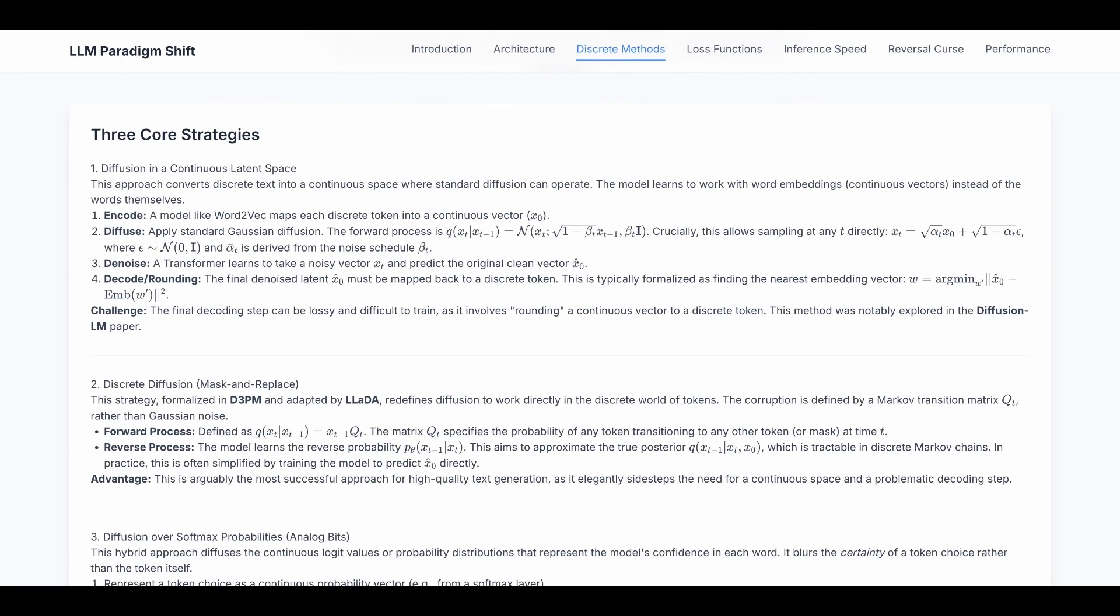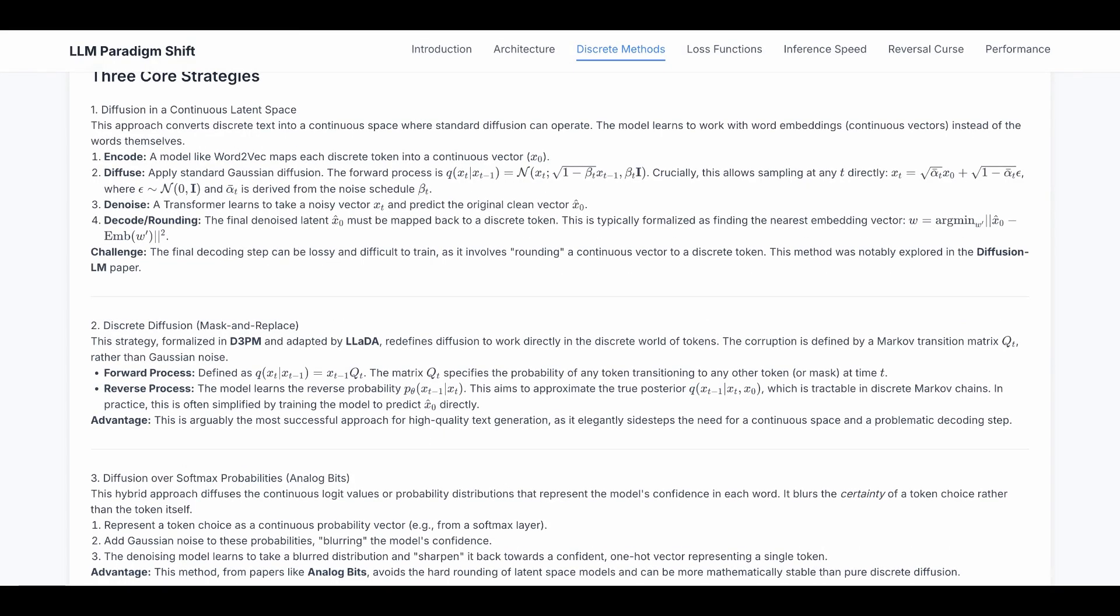The advantage is this is arguably the most successful approach for high quality text generation. However, it is extra work to define an efficient forward and reverse process that is different from the original image diffusion.